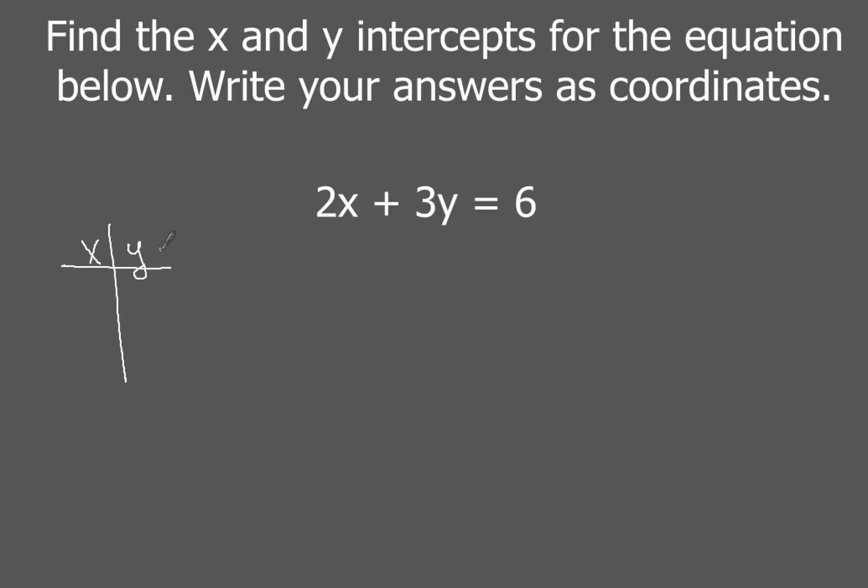So you're going to make an xy chart like that and what you're going to do is put in zero for the x to start with and then we're also going to do another equation where we put in a zero for the y. Now when you put in zero for the x, that's going to be two times zero plus three y equals six.